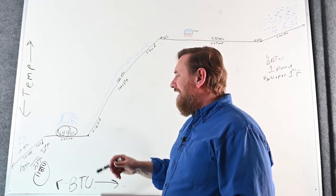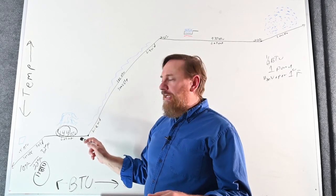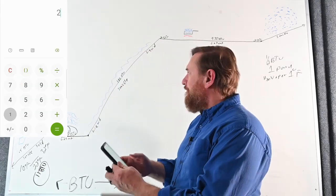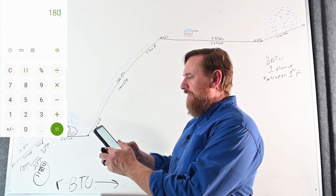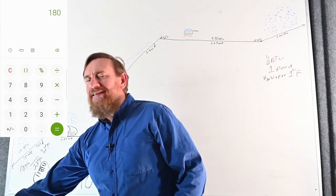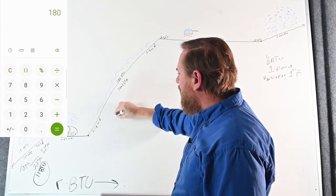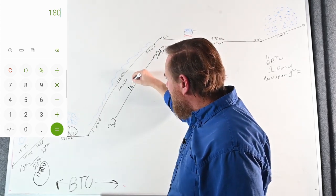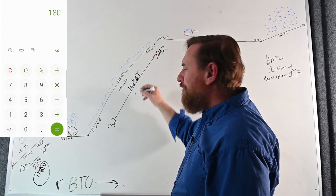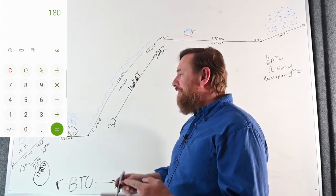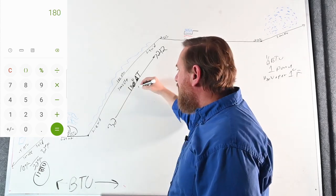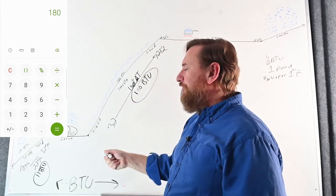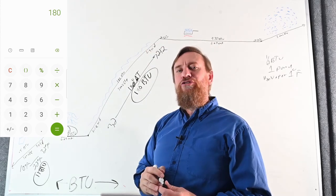The next step is to take it from 32°F fully liquid all the way up to 212°F all liquid. We take 212 minus 32, which gives us a 180°F delta T. It takes one BTU to change one pound of water one degree Fahrenheit, so 180 times one is 180 BTUs. It's going to take 180 BTUs to sensibly change it from 32°F all the way up to 212°F.